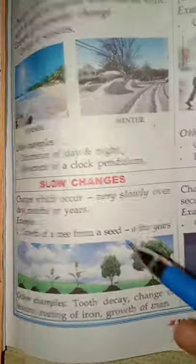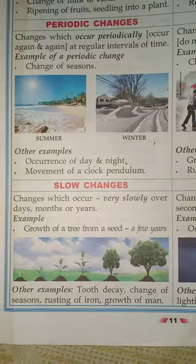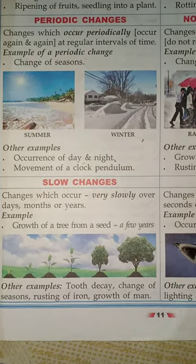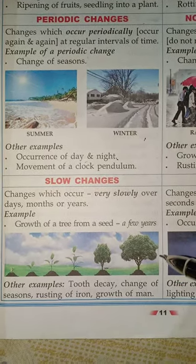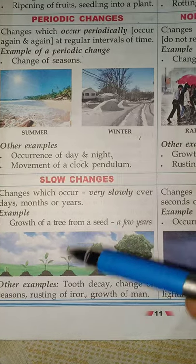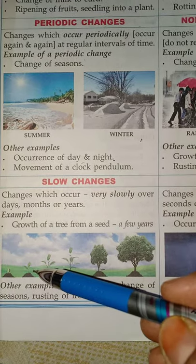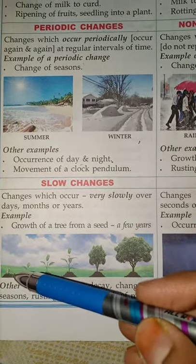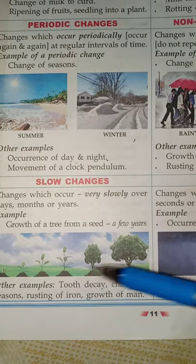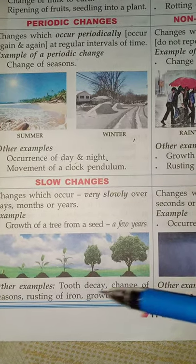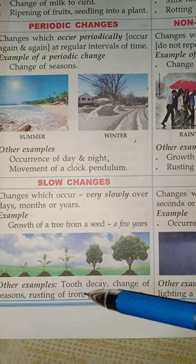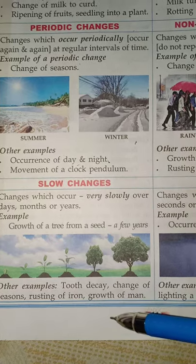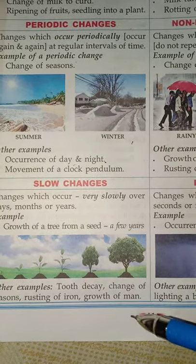Moving to the next one, slow and fast changes. Slow changes occur very slowly over days, months, and years. For example, growth of a seedling into a tree, occurrence of tooth decay, changing of seasons, rusting of iron, and growth of human beings.